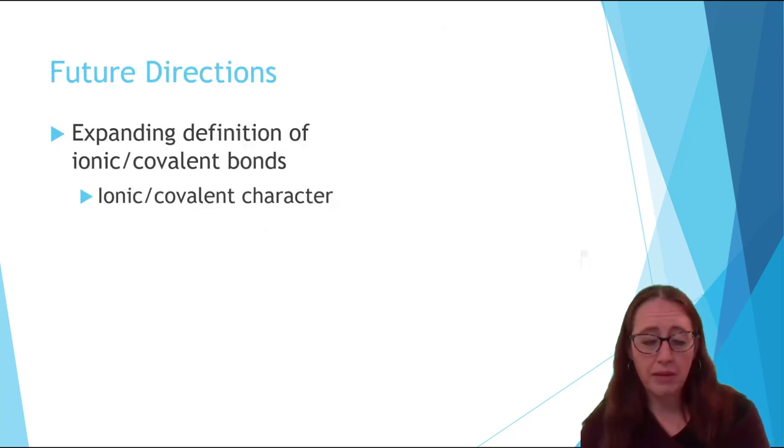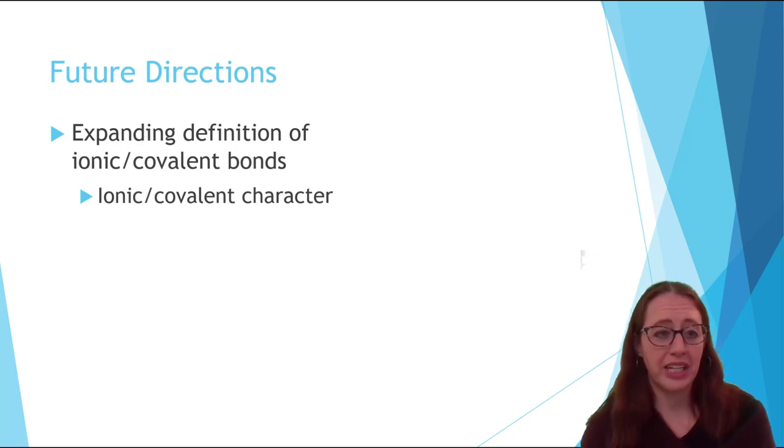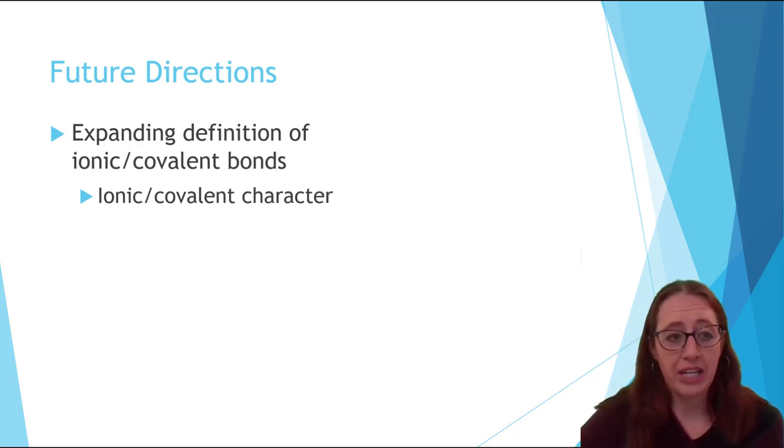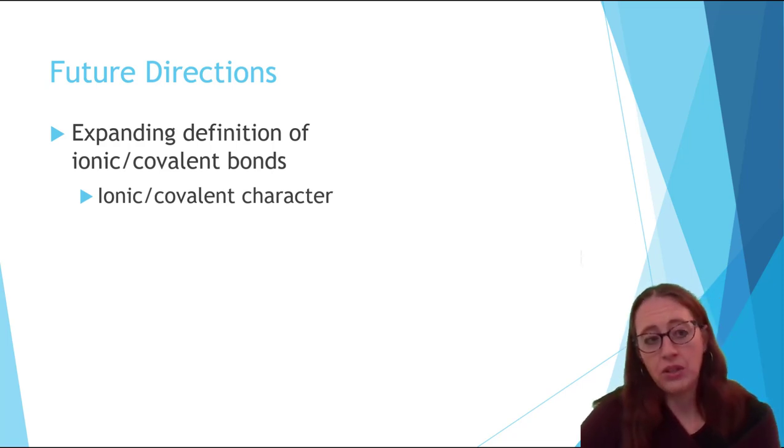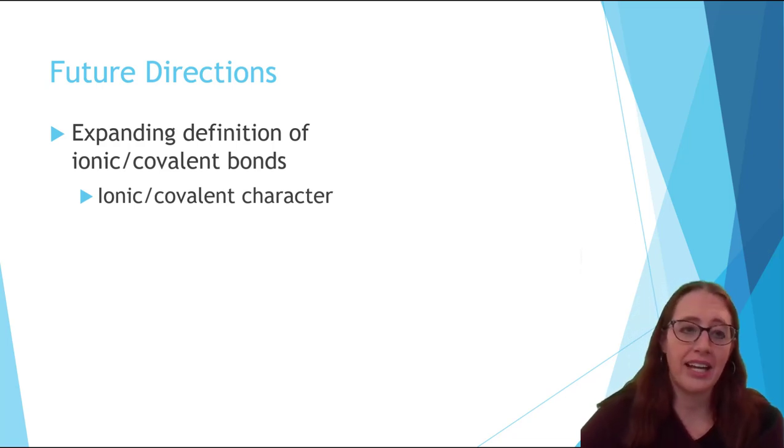So future directions coming off this review video. We're going to be expanding the definition of ionic and covalent bonds, and we're going to be talking about ionic and covalent character while doing that expansion. This is really meant to just be an introduction to the topic. You could think of it as sort of a high school level discussion, and we'll expand upon that into the college level discussion next.